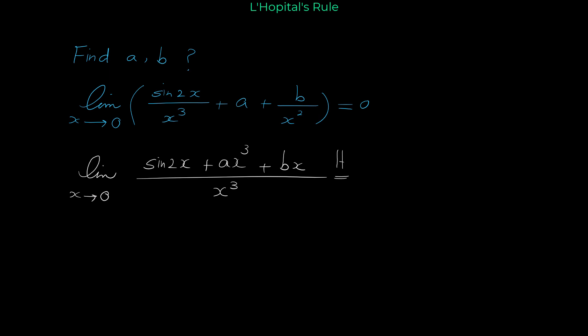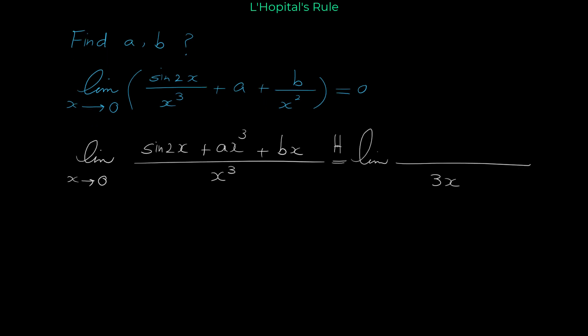Applying L'Hôpital's rule, we take the derivative of the numerator and denominator separately. The derivative of the denominator x cubed is 3x squared. The derivative of the numerator: derivative of sine of 2x is 2 cosine 2x (using the chain rule, derivative of sine is cosine and derivative of 2x is 2), derivative of ax cubed is 3ax squared, and derivative of bx is b.